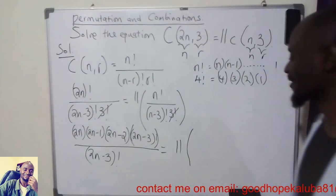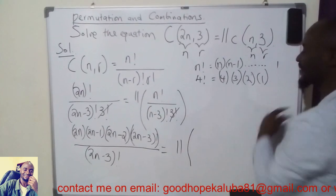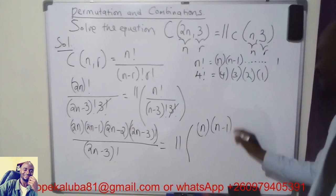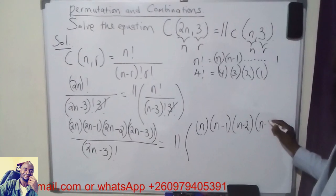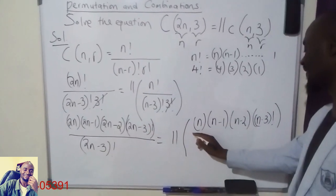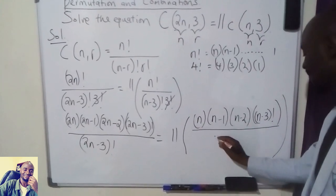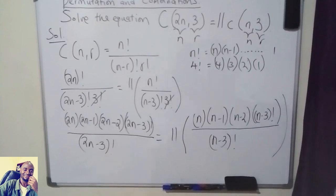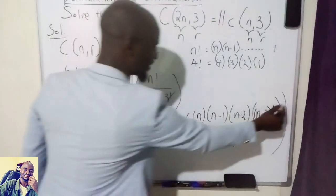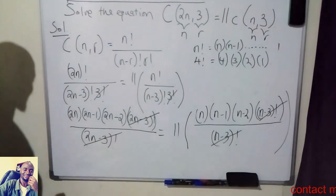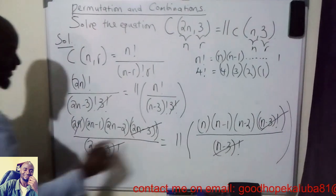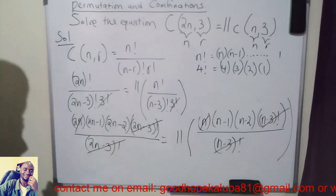Then I will expand n factorial using the definition of a factorial, which would be n multiplied by (n minus 1), multiplied by (n minus 2), multiplied by (n minus 3) factorial. I'm ending here because I have (n minus 3) factorial in the denominator. Then we are going to have (n minus 3) factorial. At this point I can simplify — this is similar to this, and this is similar to this — and the (n minus 3) factorial also cancels. So I can simplify what appears on both sides of the equation.